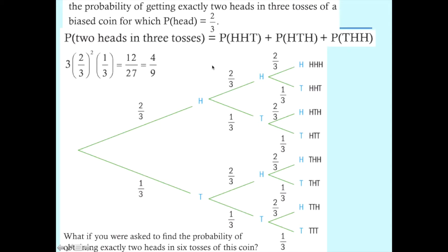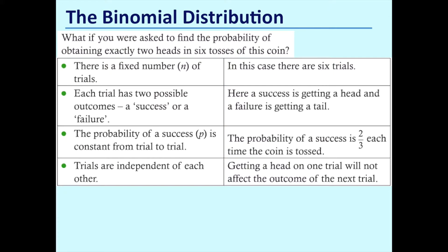But what happens if we have a question like this? Find the probability of obtaining exactly two heads in six tosses of this coin. You could try to answer it this way, but it's going to be hugely complex. We want to find a mathematically more efficient way of doing it, and that is where the binomial distribution comes in. Let's check if this situation fulfills the conditions we looked at at the beginning of this session.